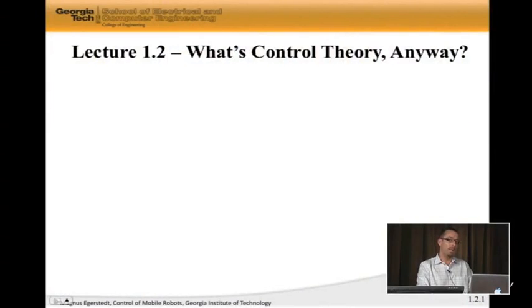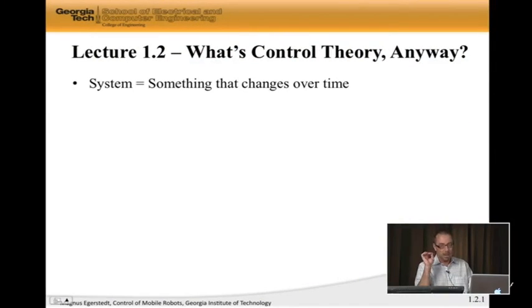Ultimately controls deals with dynamical systems. These are abstractions that describe something that changes over time. This could be a car that's moving. This could be the price of a particular stock. But ultimately controls is dealing with how can we best, or how can we influence this change of the system.